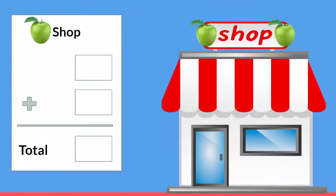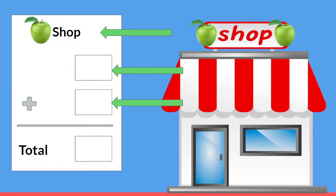Today we're going to be using a store receipt to help us add two and then three two-digit numbers. On a receipt, the very top line usually tells us what store we're purchasing things from, and today we're going to be buying some items from the fruit shop. The next areas on our receipt show us what we have purchased and how much they cost. And then on the very bottom of our receipt it tells us the total, or how much money we owe when we've added all of our purchases together.